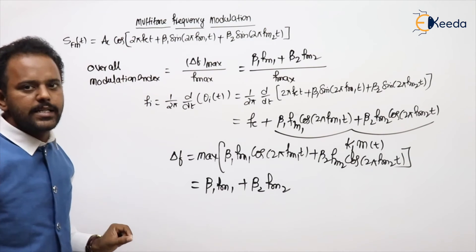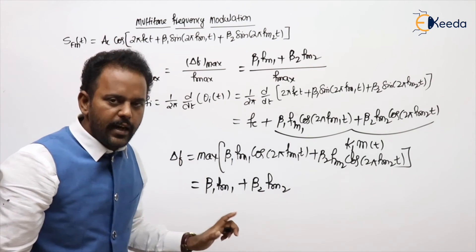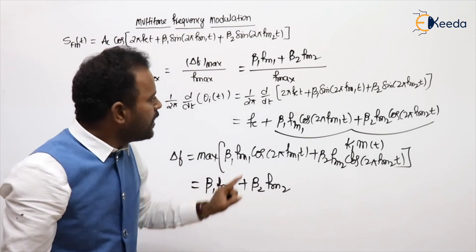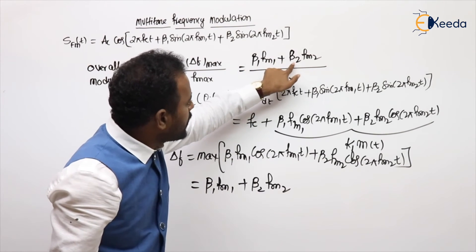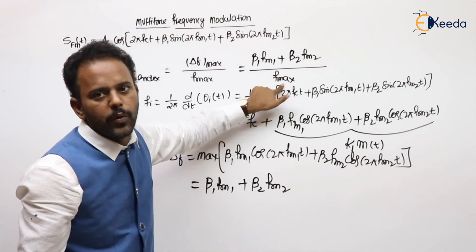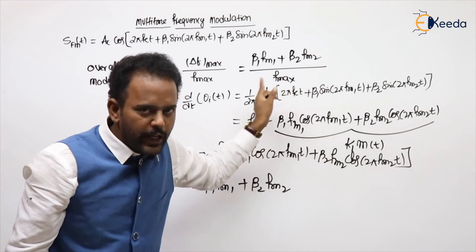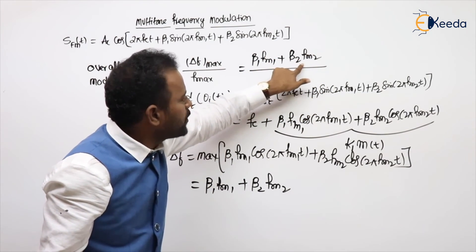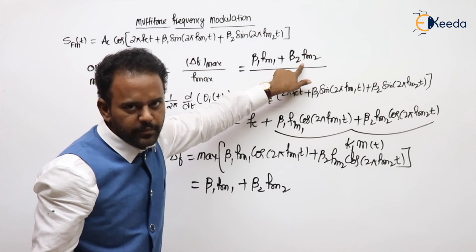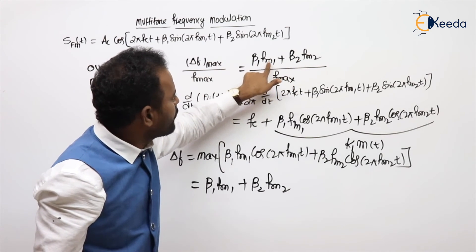My meaning of f max here is based on the signal, whether fm1 is large or fm2 is large, substitute that you will get that. For example, both are same. For example, fm1, fm2 value both are same. Then I can take fm common.